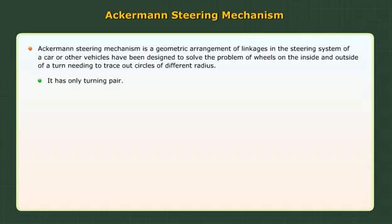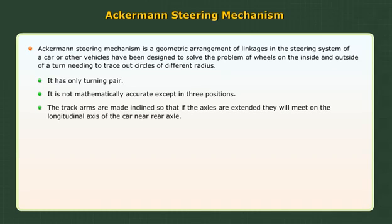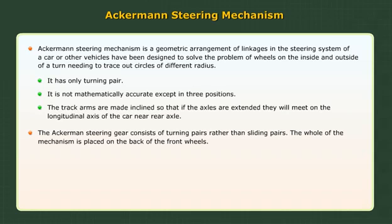It has only turning pairs and is not mathematically accurate except in three positions. The track arms are made inclined so that if the axles are extended they will meet on the longitudinal axis of the car near the rear axle. The Ackerman steering gear consists of turning pairs rather than sliding pairs, and the whole mechanism is placed on the back of the front wheels.